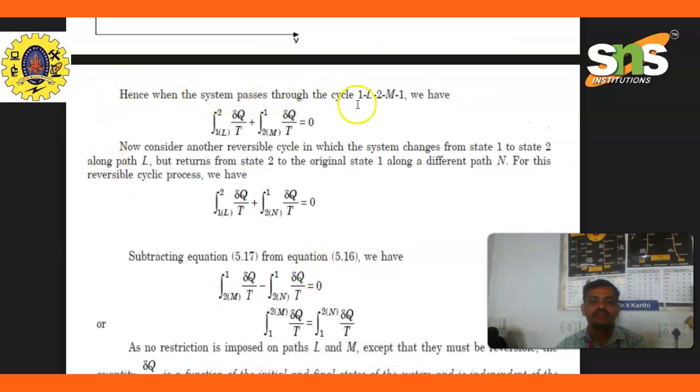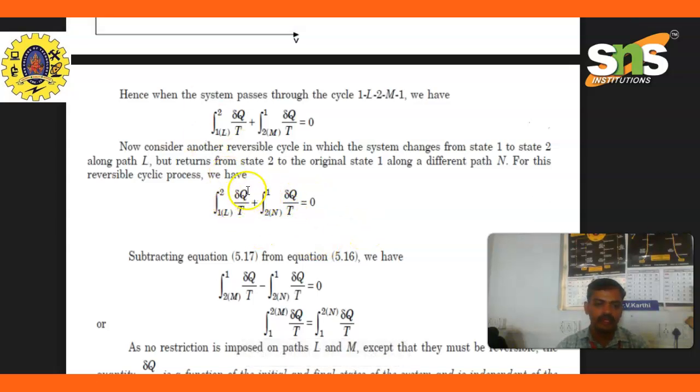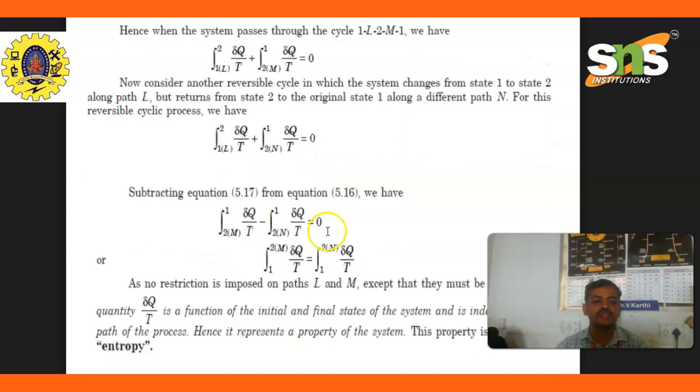When the system passes through the cycle 1-L-2-M-1, consider another reversible cycle in which the system changes from state 1 to state 2 along path L but returns from state 2 to original state 1 along a different path N. For this reversible process, the integral from 1 to 2 via L of del Q divided by T plus integral from 2 to 1 via N of del Q divided by T equals zero.